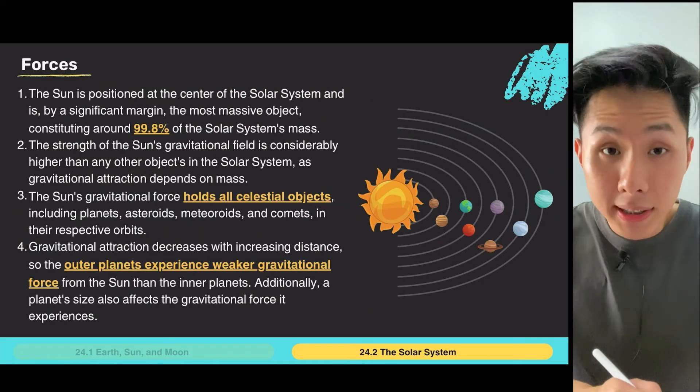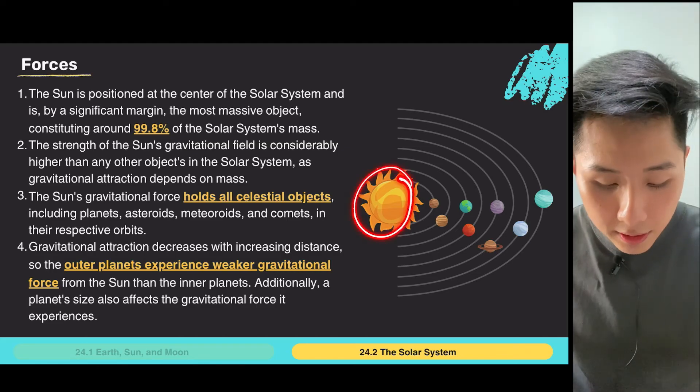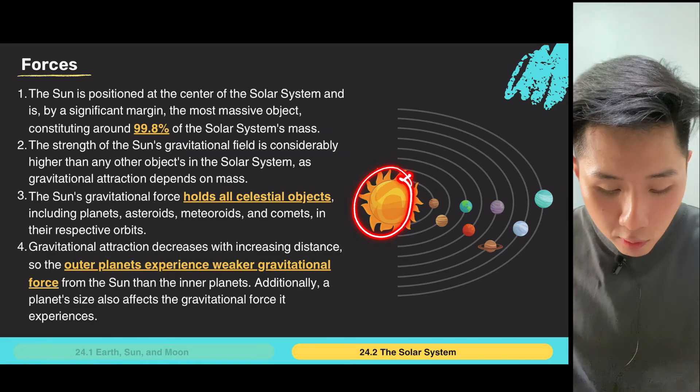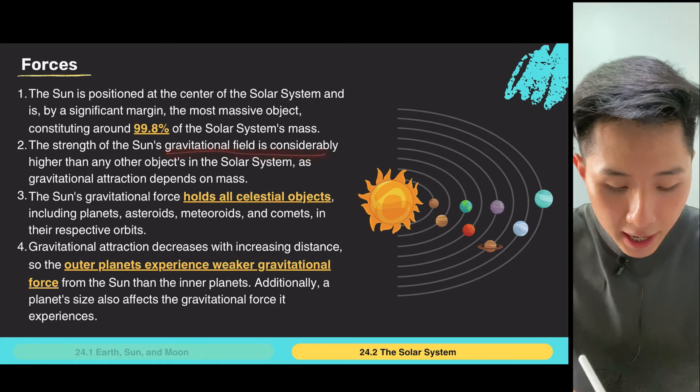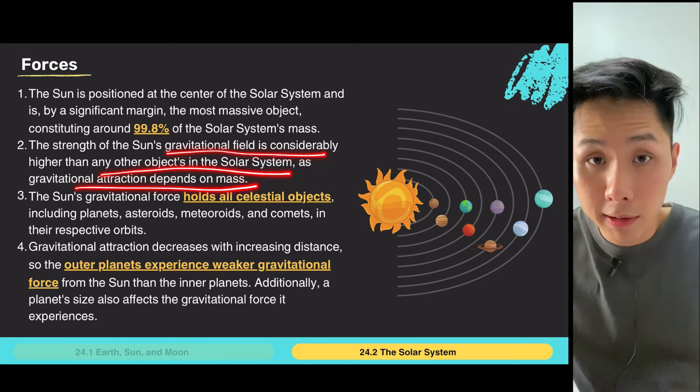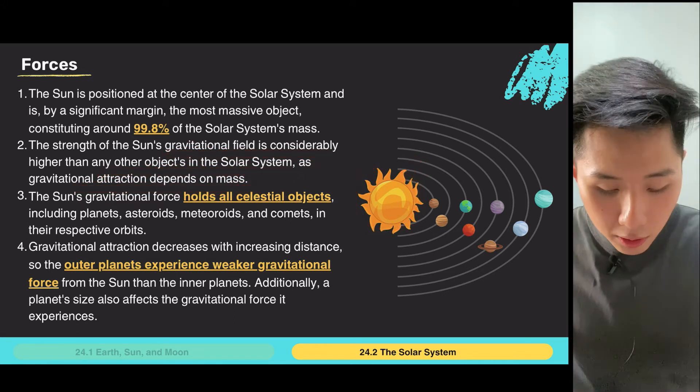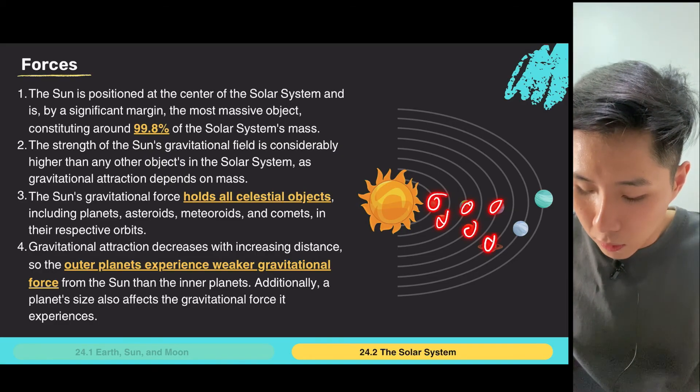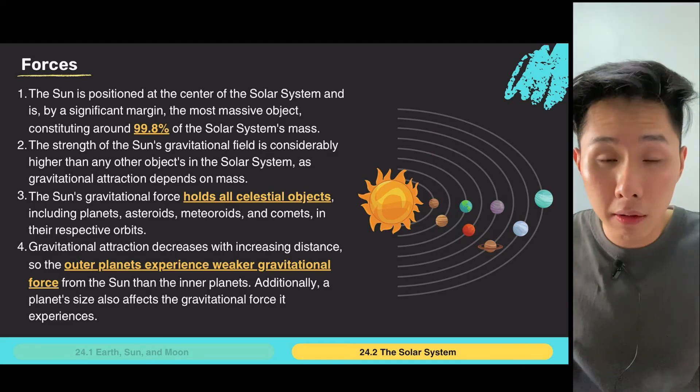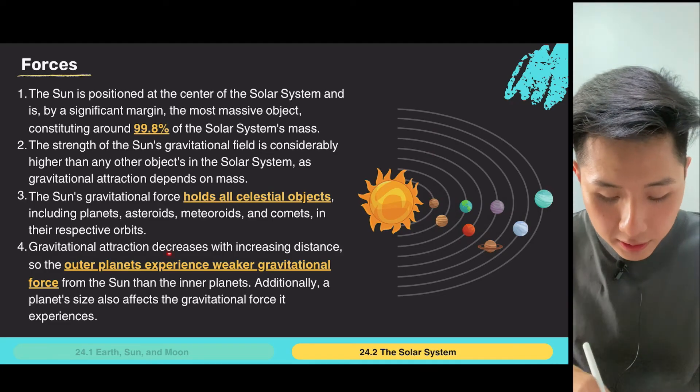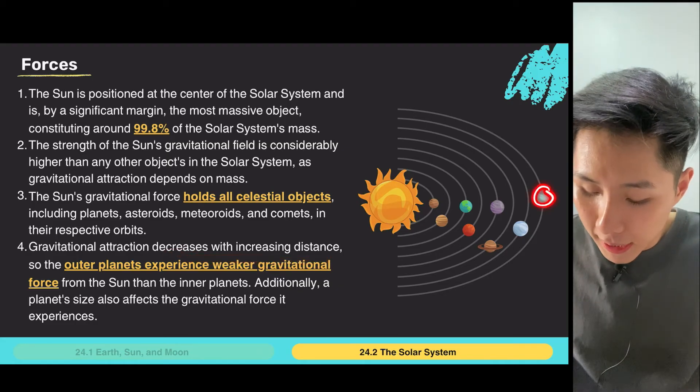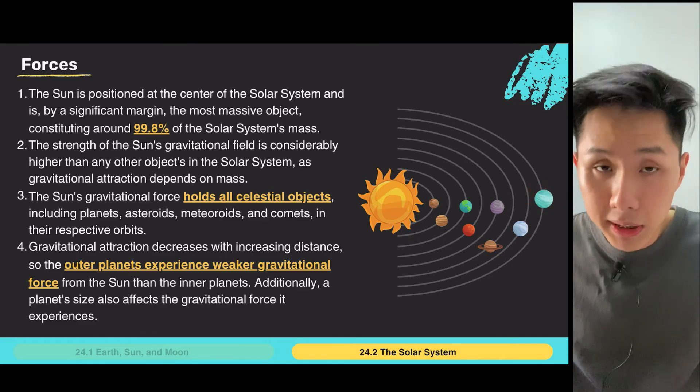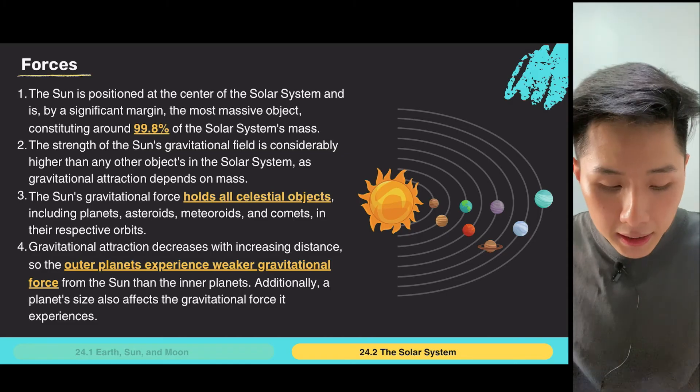So, that's basically it. And also, forces, just on facts here, the sun is positioned at the center of the solar system, and it's the most massive object. That means it contains the most mass. And the strength of the gravitational field is considerably higher than any other objects. So, because gravitational acceleration depends on mass, because it's very heavy, it exudes a lot of gravitational force. And this gravitational force, as mentioned, they hold all these objects, planets, traveling in circular fashion. So, gravitational attraction decreases with distance, meaning the planets here, like further from the sun, the less gravitational pull it's going to experience from the sun. So, that's just some facts.